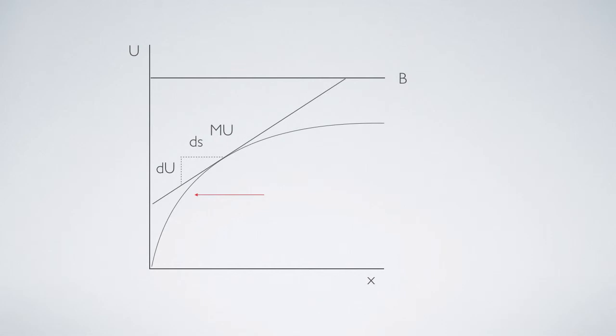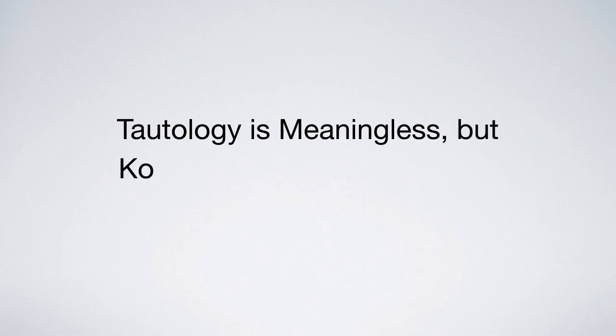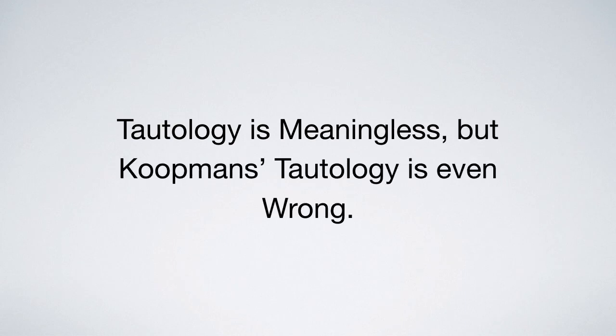Moreover, the multiplication of the whole saving means zero consumption and zero utility. Tautology is meaningless.